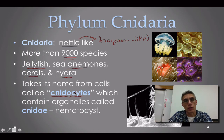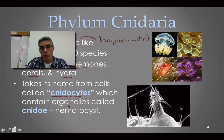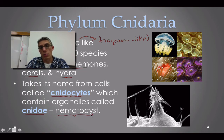The cnidocytes are pretty significant when it comes to this phylum — these are the stinging cells found in each of these animals. The organelle responsible for this stinging nature is called nidae, and there are actually 20 different types of nidae that have been discovered in these animals. The specific type we're going to focus on is the nematocyst.